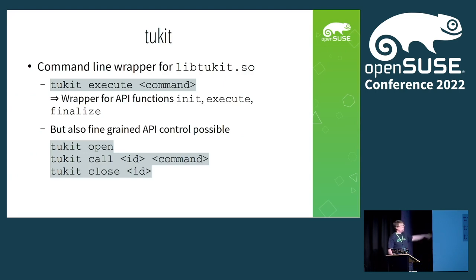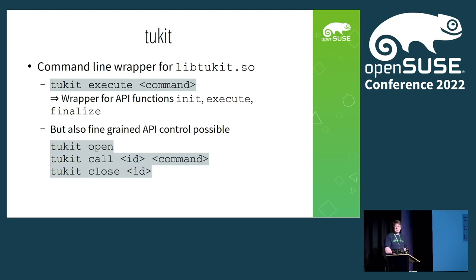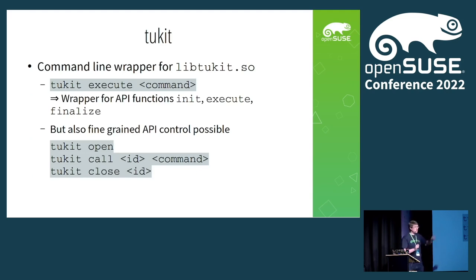You can also do a finer-grained execution. You can use tukit open, tukit call, then execute whatever you want — you'd have to check the return code yourself. And if you're ready, you could just call tukit close. That's direct access to the API functionality — you usually don't want to use that on a regular system; it's more interesting if you're developing with tukit.